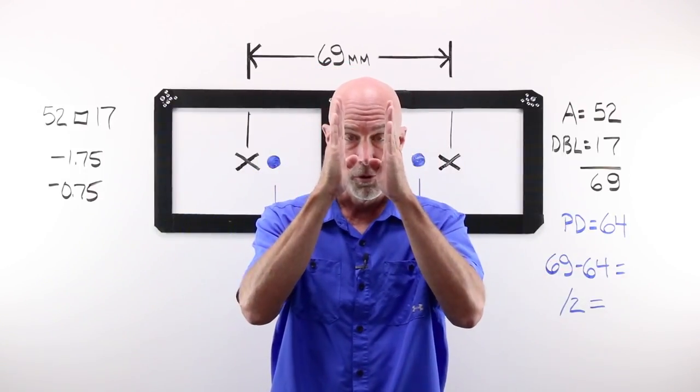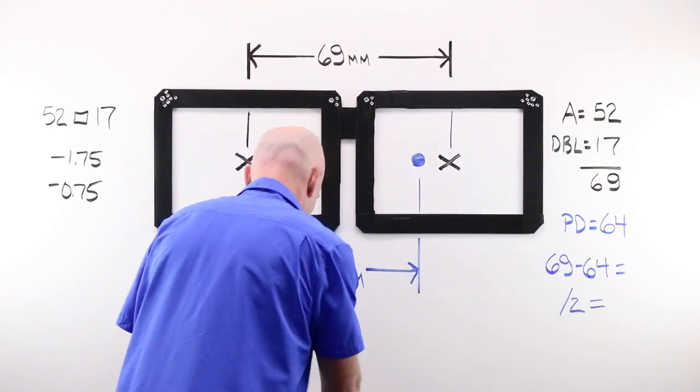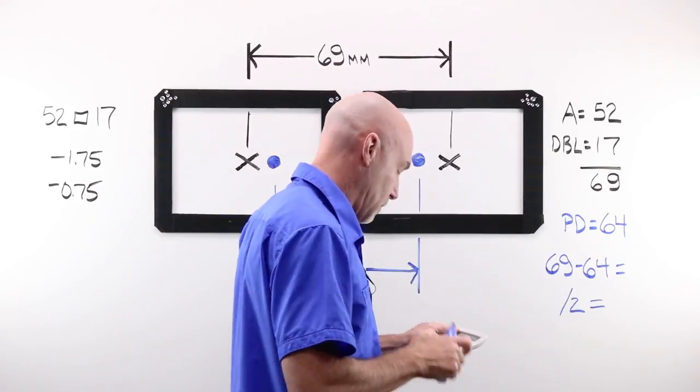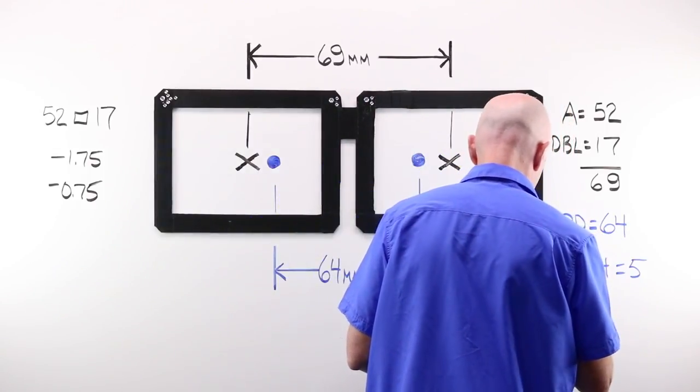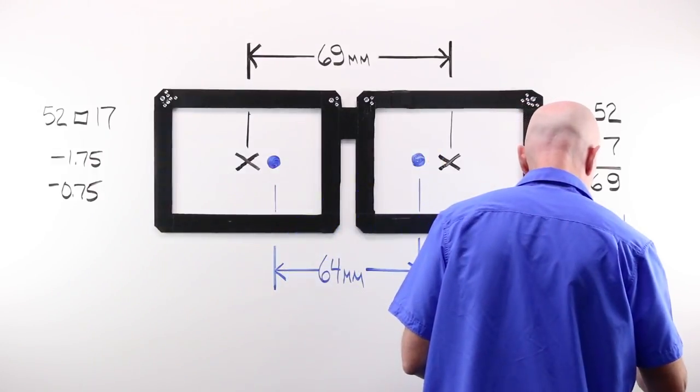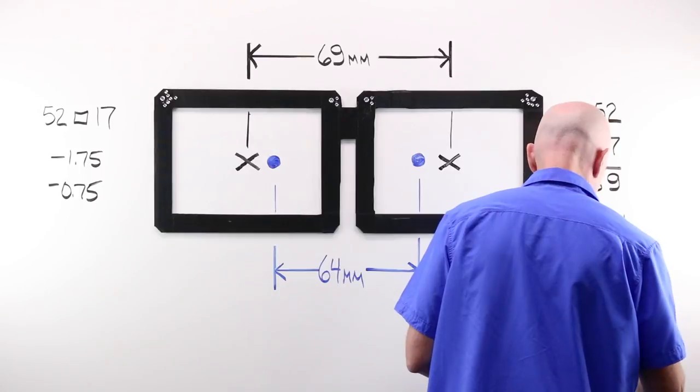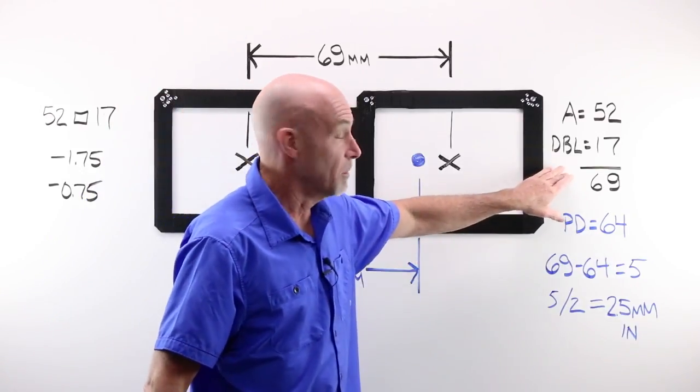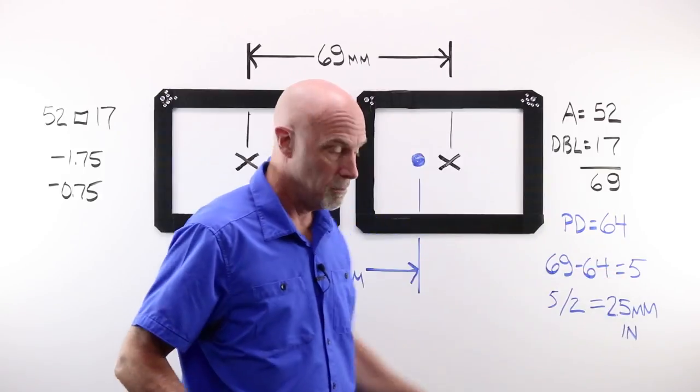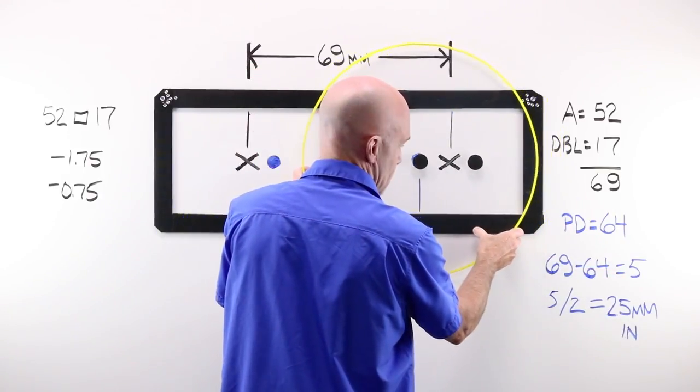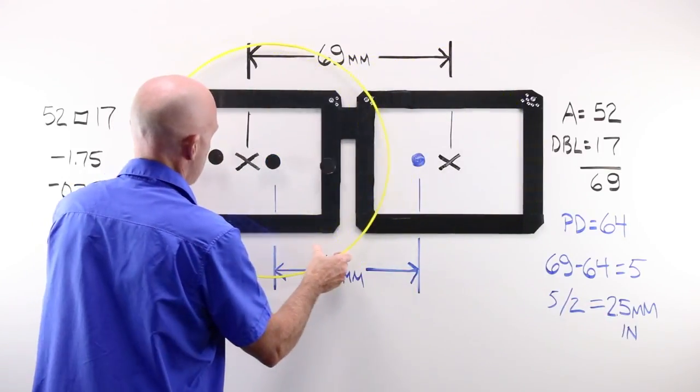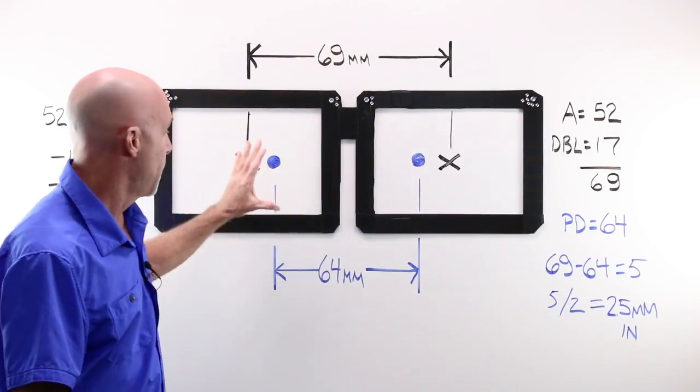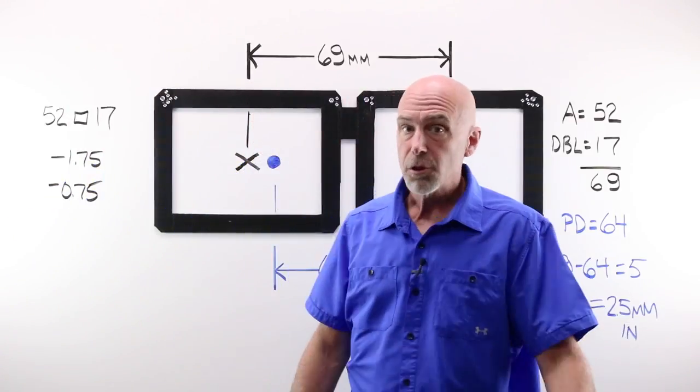I have a human PD of 64, pupil to pupil. Frame PD out here, human here. If I have a frame PD of 69 and I take away 64, I have a difference of five. Five divided by two, I end up with 2.5 millimeters in decentration per eye. And because the frame is a little bit smaller than the last one and my PD is a little bit wider, I need to move that lens a little tiny bit, just 2.5 millimeters, just 2.5 millimeters to get that OC to line up with that wearer's pupil. Do that and you're going to have a great pair of glasses.